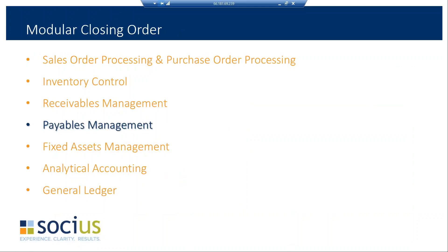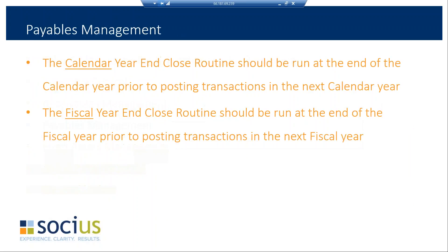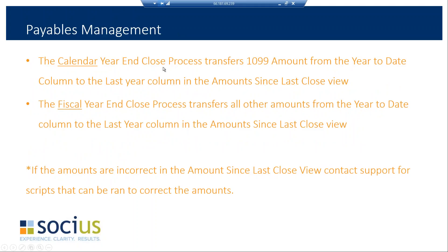Now for payables management, which is very similar to receivables. Again, you have a calendar year-end close and a fiscal year-end close, which should be done right at the end of the calendar and fiscal year. The calendar year-end close has a specific purpose: to transfer your 1099 amount from the year-to-date column to last year in the amount-since-last-closed view. The fiscal year-end close handles everything else — year-to-date invoices, billings, cash payments, etc. There is also a utility to fix incorrect amounts in this view if needed.